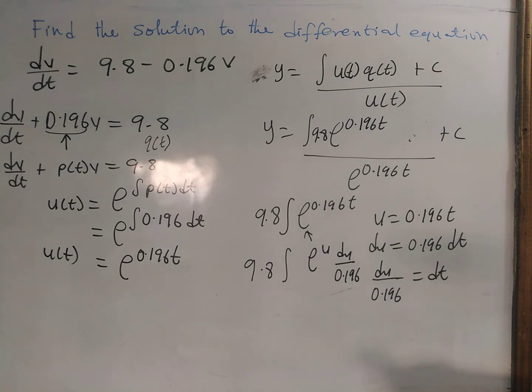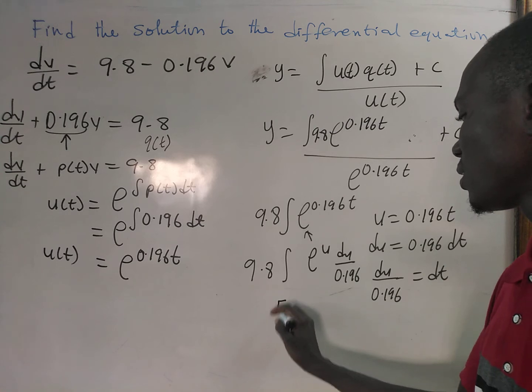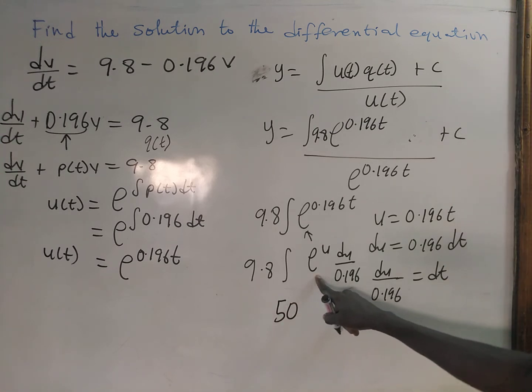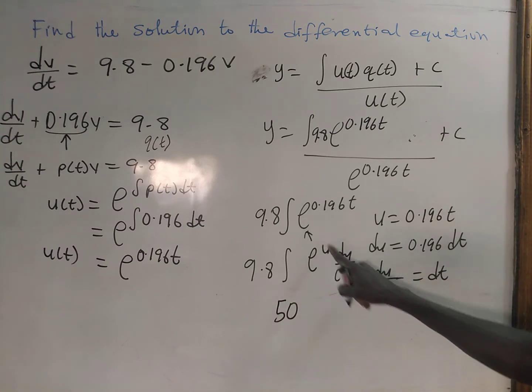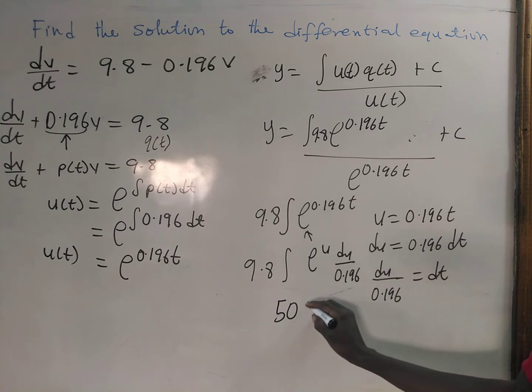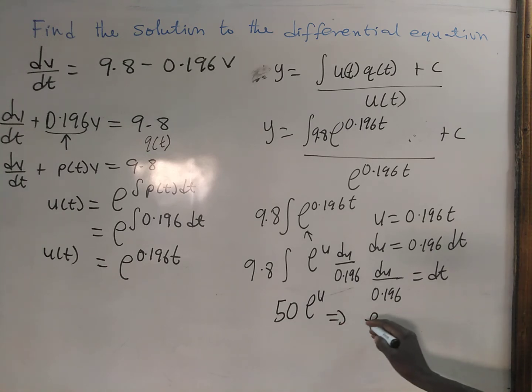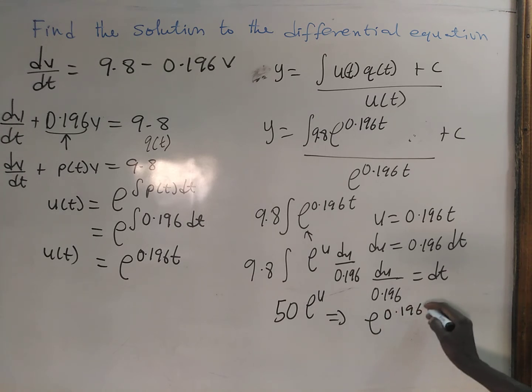If you integrate e to the power u du, you get the same e to the power u. So this gives us e to the power 0.196t times 50. Very simple as that.